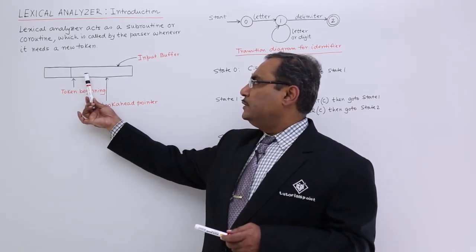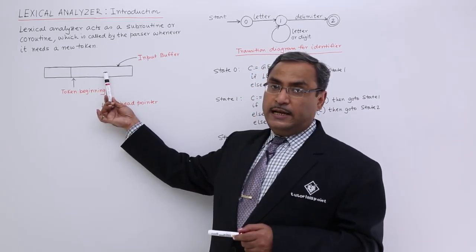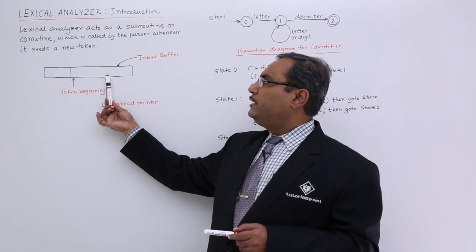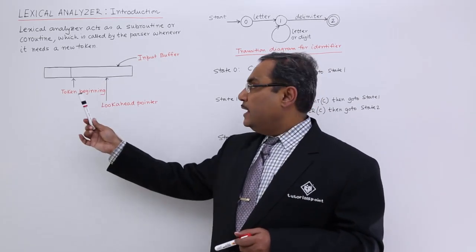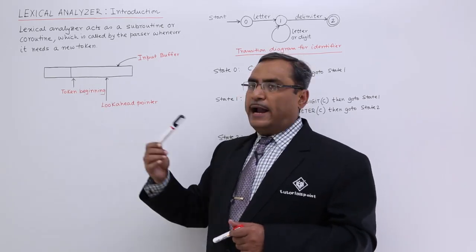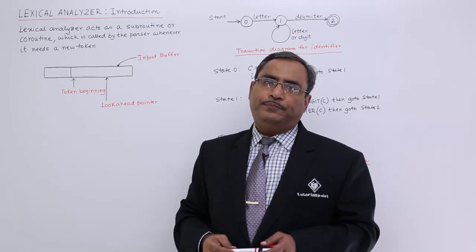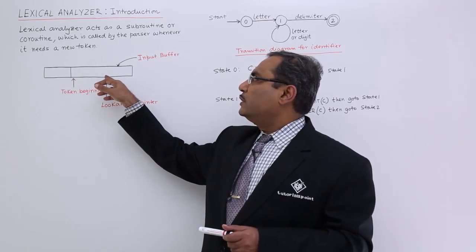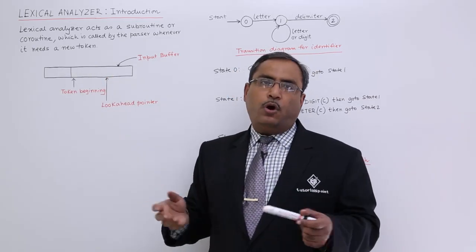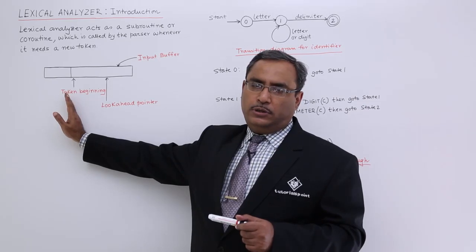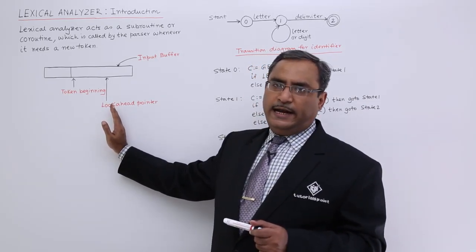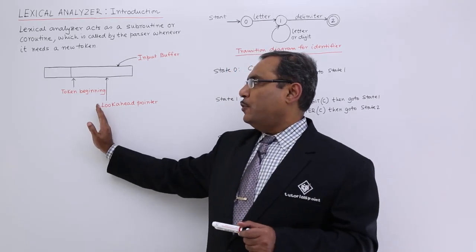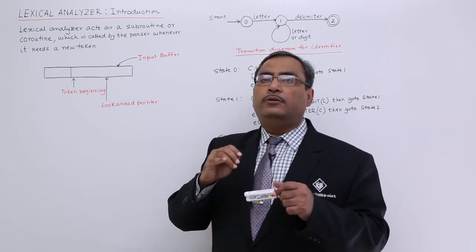It will search for the delimiter. If it finds a delimiter, that means there is a finite probability of finding one token up to the previous character. So it will retract — it will come back to the previous character — and from the token beginning to this particular position it will try to analyze and categorize the token. In this way the lexical analyzer will do the token analysis, and it is also known as tokenizer. The input buffer contains the program or single statement; one pointer points to the token beginning and another pointer advances. If it gets a delimiter character it will retract, and from the token beginning to the look-ahead pointer position there will be a token, so it will recognize what type the token is.